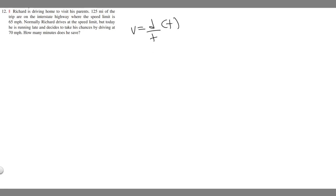So if I multiply both sides by t we'll get tv equals d and then if you divide both sides by v you're going to get that t is equal to d divided by v.